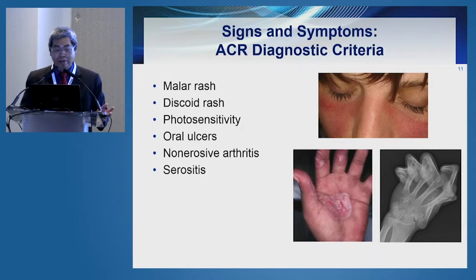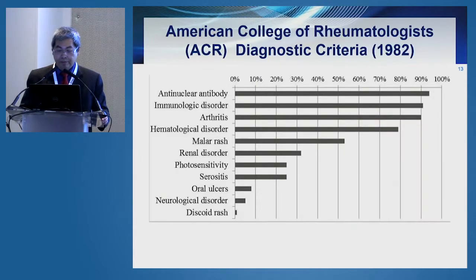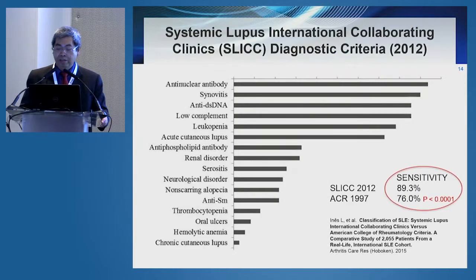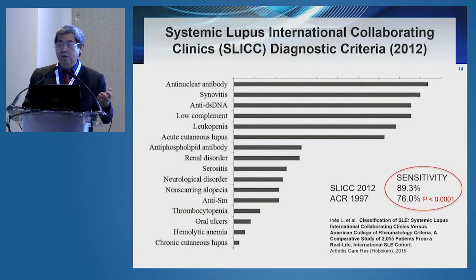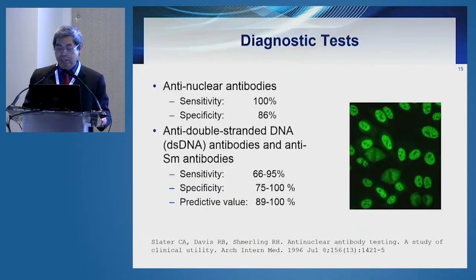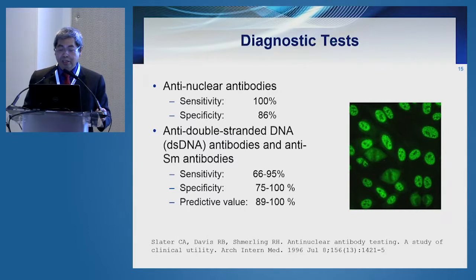As medical students, we all had to memorize the American College of Rheumatology diagnostic criteria. Some of these manifestations were fairly mild, but some were life-threatening. About five years ago, the Systemic Lupus International Collaborating Clinics, or SLIC, came out with updated diagnostic criteria adding more criteria. Publications have shown that using the SLIC criteria increases sensitivity for diagnosing SLE, and an important component is establishing the presence of different antibodies.